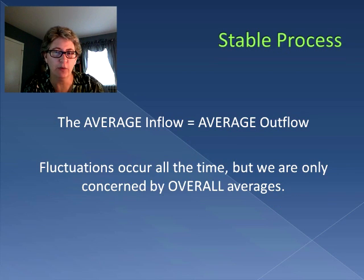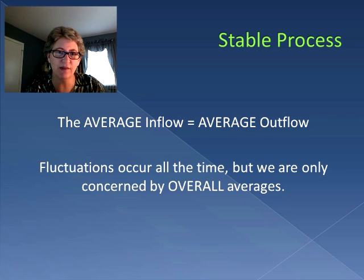When we analyze a process, we need it to be stable. A stable process says the units that come in on average - the rate of flow coming in - equals the rate of flow going out. That's average inflow equaling average outflow. We all know that averages are not actually what is happening on a moment-to-moment basis.